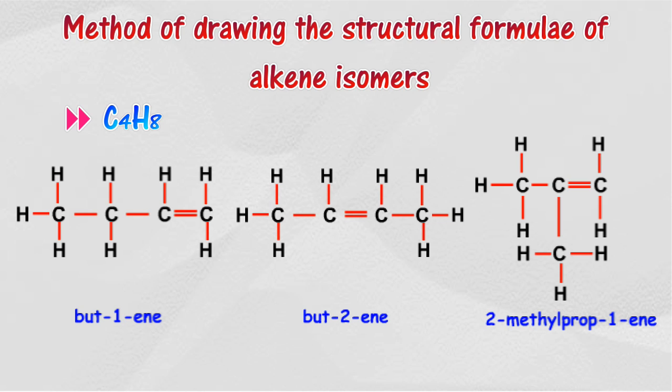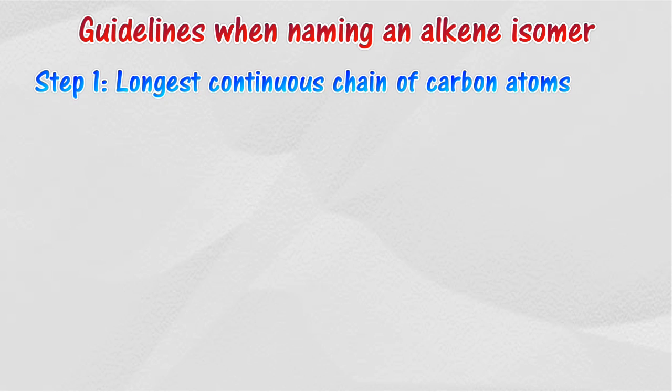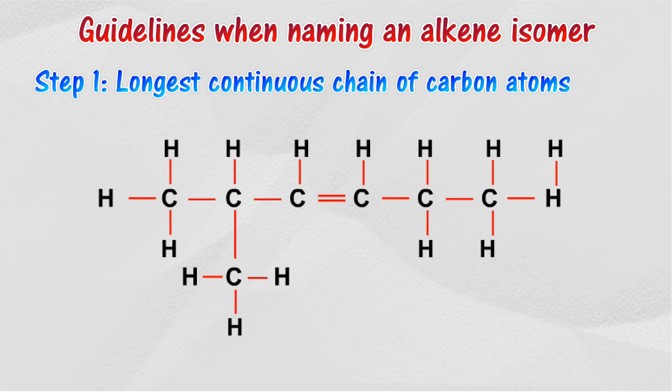The isomers in the same homologous series will have similar chemical properties but different physical properties. The steps for naming the isomers of alkenes are the same as those used previously, with an additional step.